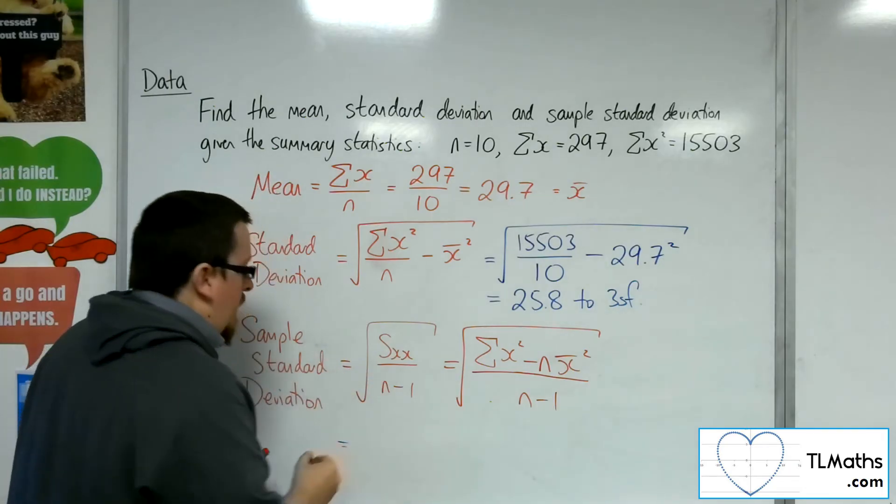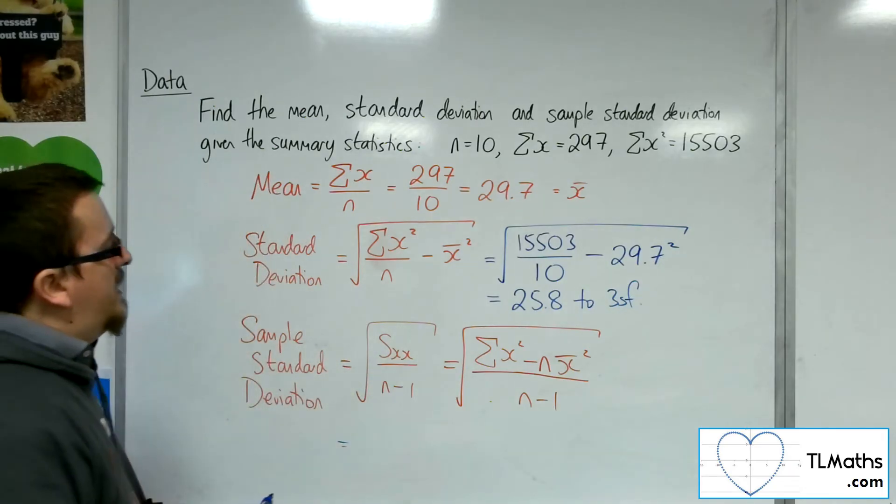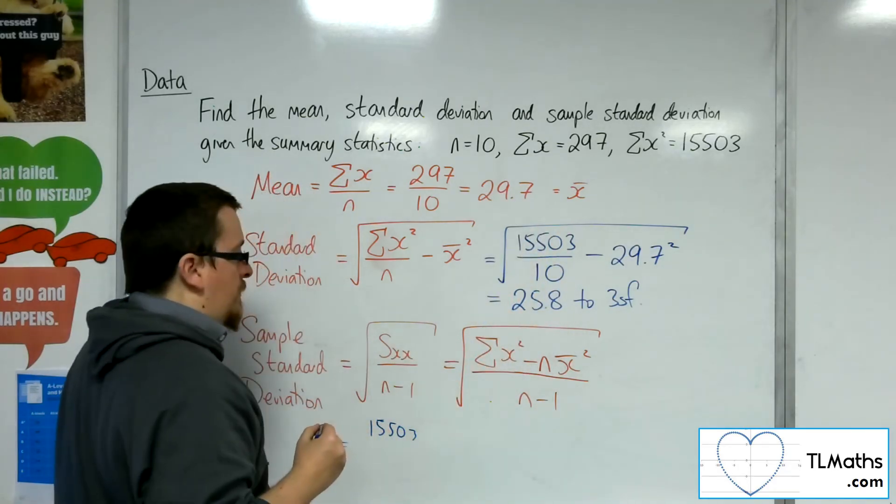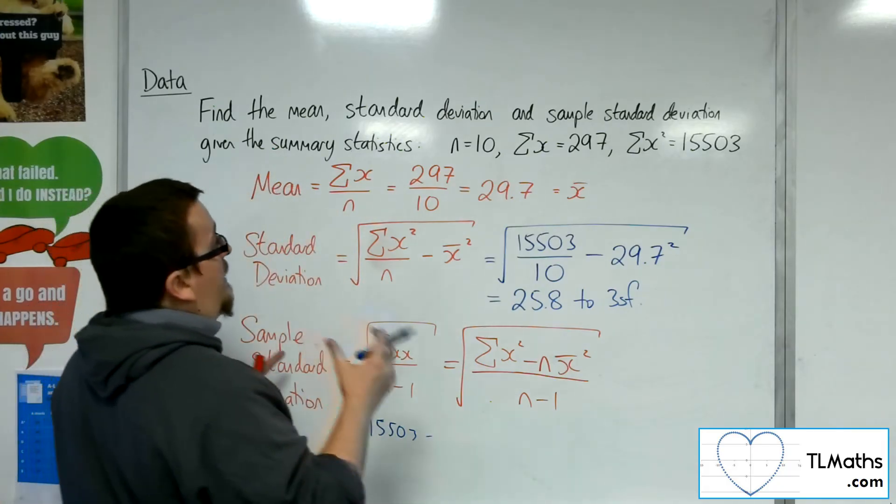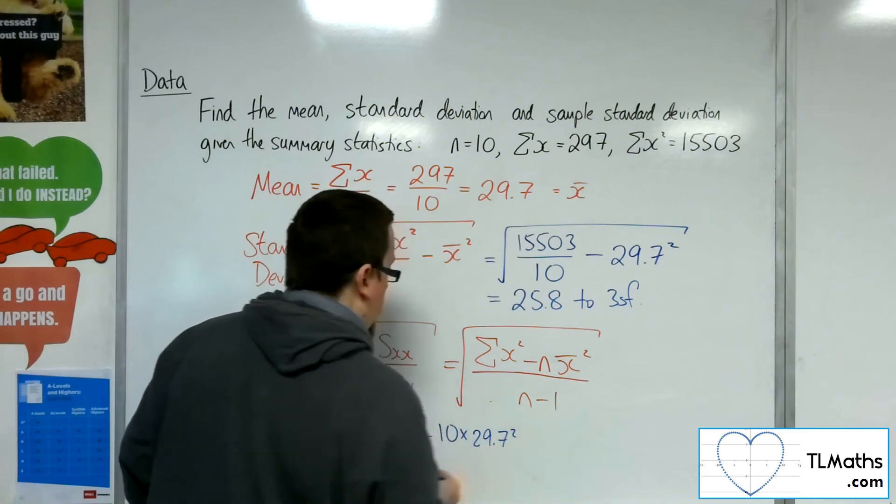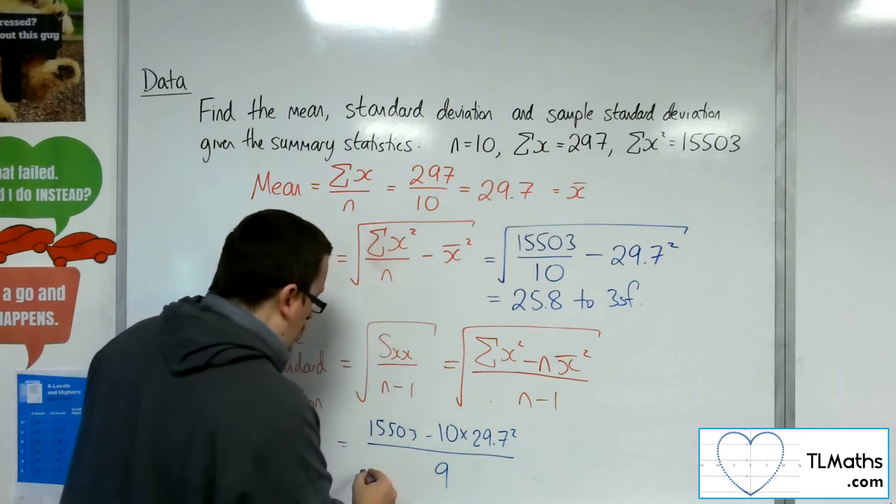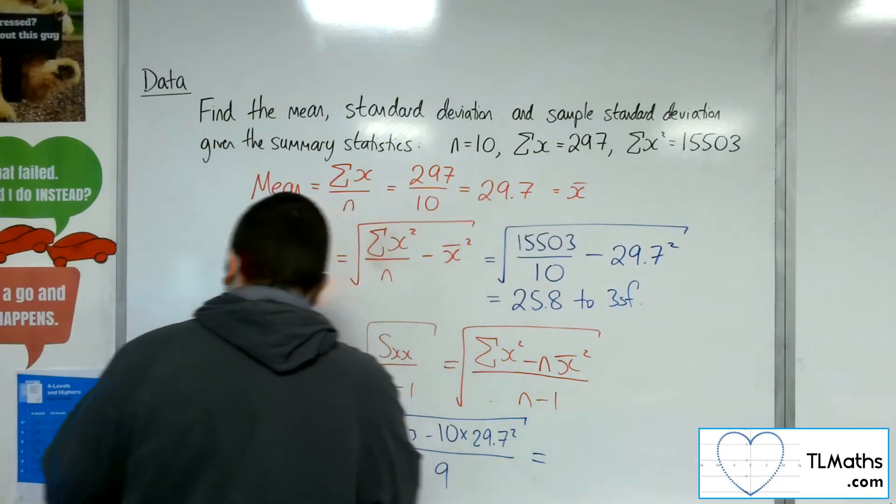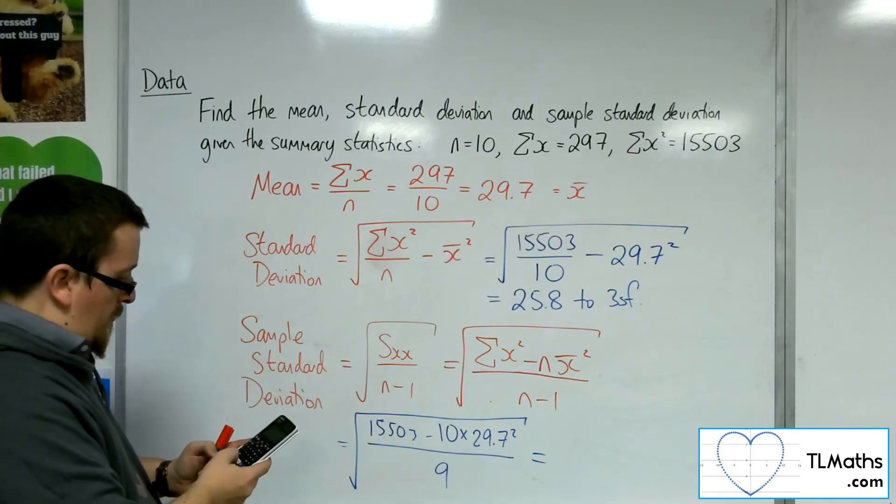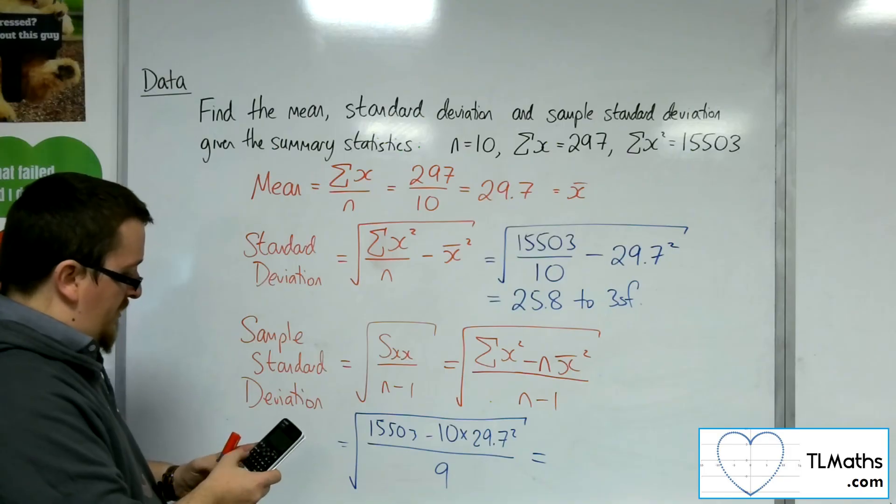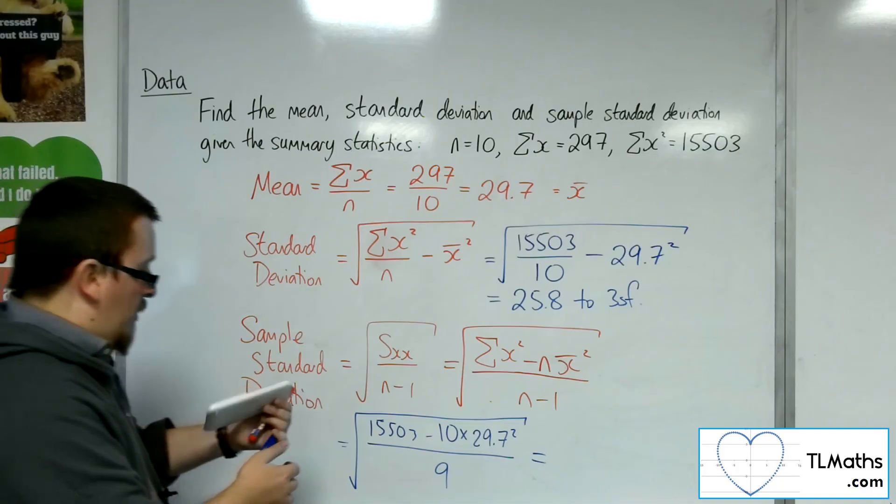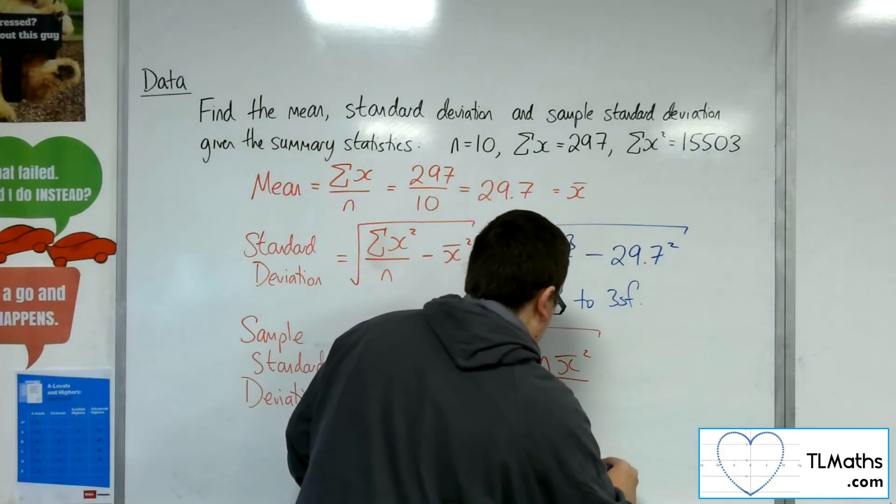So, now, if I'm going to use my summary statistics, I've got the 15503, take away n, which is 10, times by the mean squared, so 29.7 squared, divided by n minus 1, square rooted. So, you've got the square root of 15503, take away 10 lots of 29.7 squared, divided by 9, and you get 27.2 to 3 sig fig.